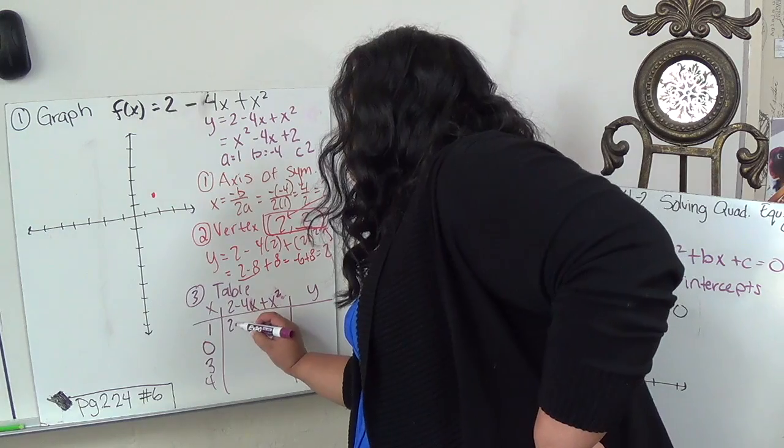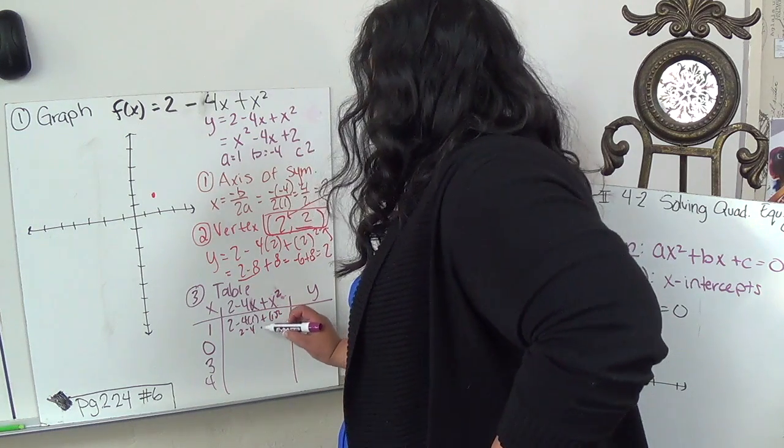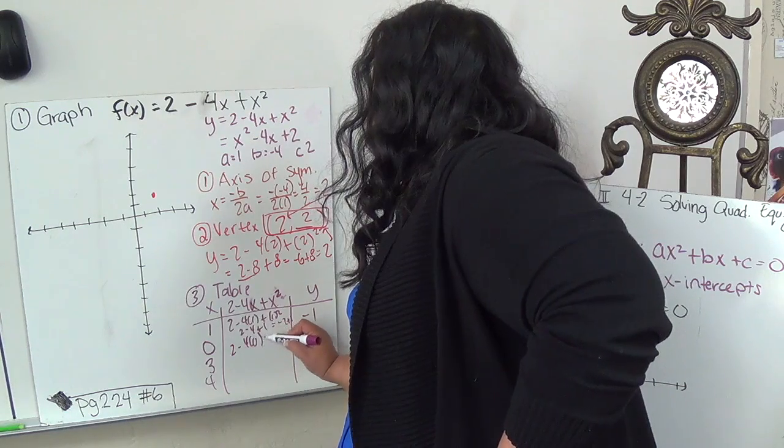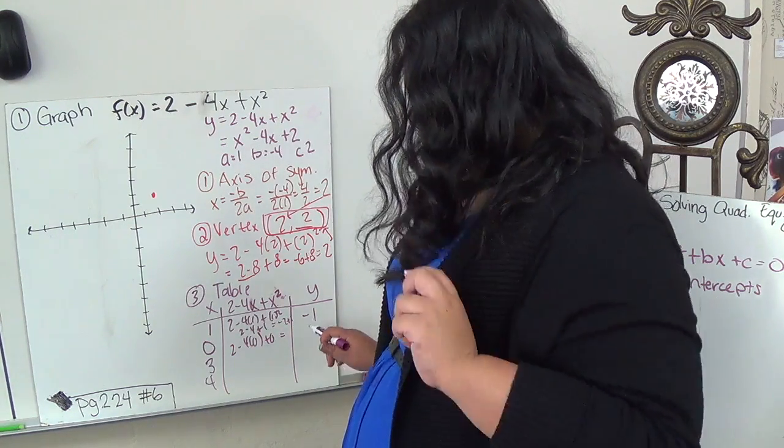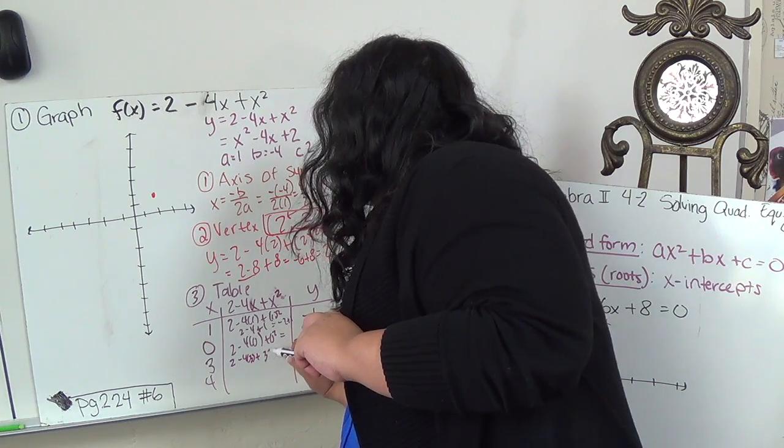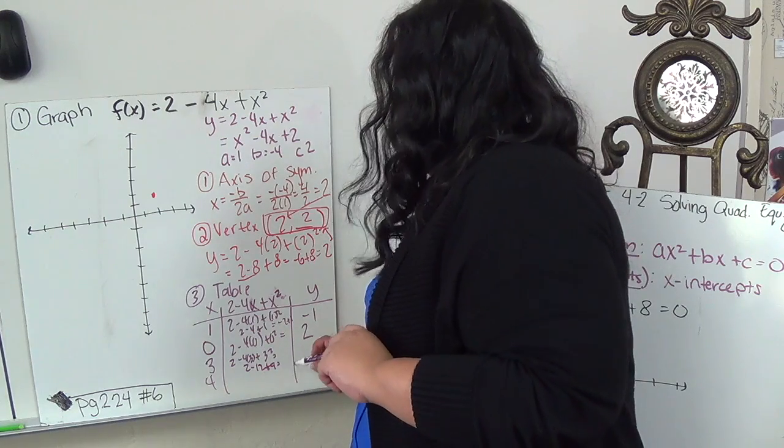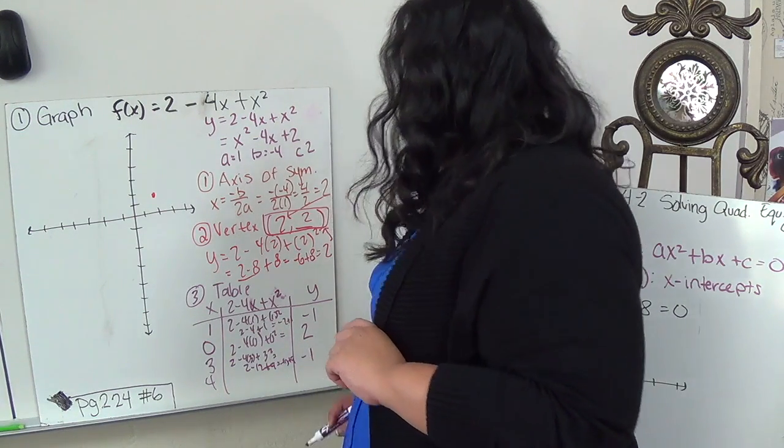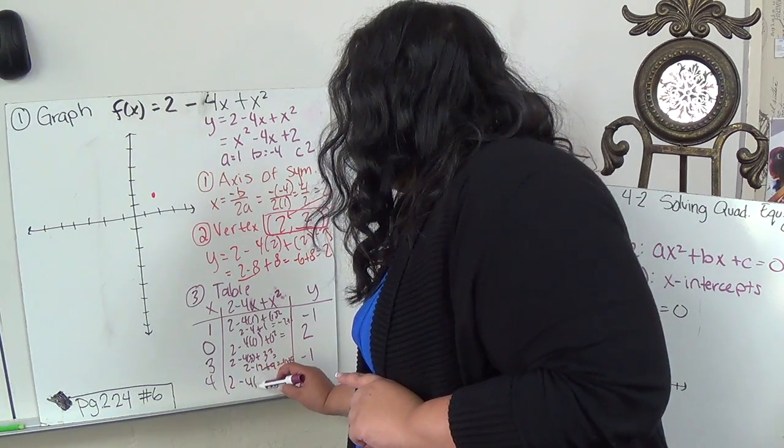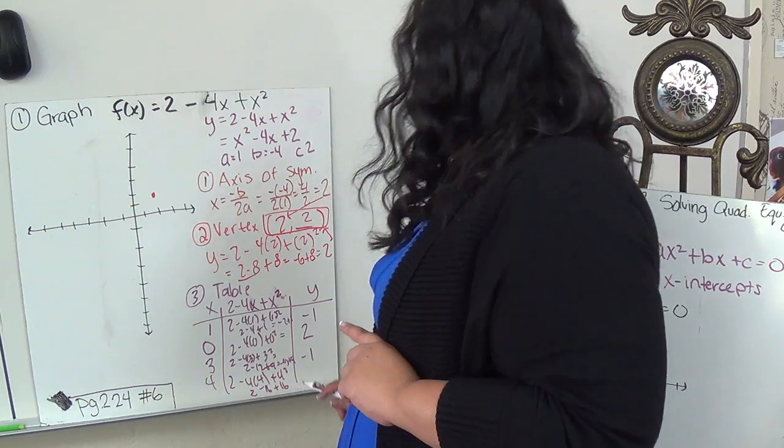So 2 minus 4 times 1 plus 1 squared is 2 minus 4 plus 1. This gives me negative 2 plus 1, which is negative 1. 2 minus 4 times 0 plus 0 gives me just 2. 2 minus 4 times 3 plus 3 squared gives me 2 minus 12 plus 9, which is negative 10 plus 9, which is negative 1. And then 4, 2 minus 4 times 4 plus 4 squared is 2 minus 16 plus 16, which is 2.